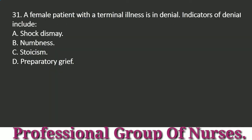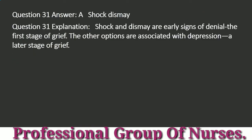Question 31: A female patient with a terminal illness is in denial. Indicators of denial include: a. Shock and dismay. b. Numbness. c. Stoicism. d. Preparatory grief. Answer: a. Shock and dismay. Explanation: Shock and dismay are early signs of denial, the first stage of grief. The other options are associated with depression, a later stage of grief.